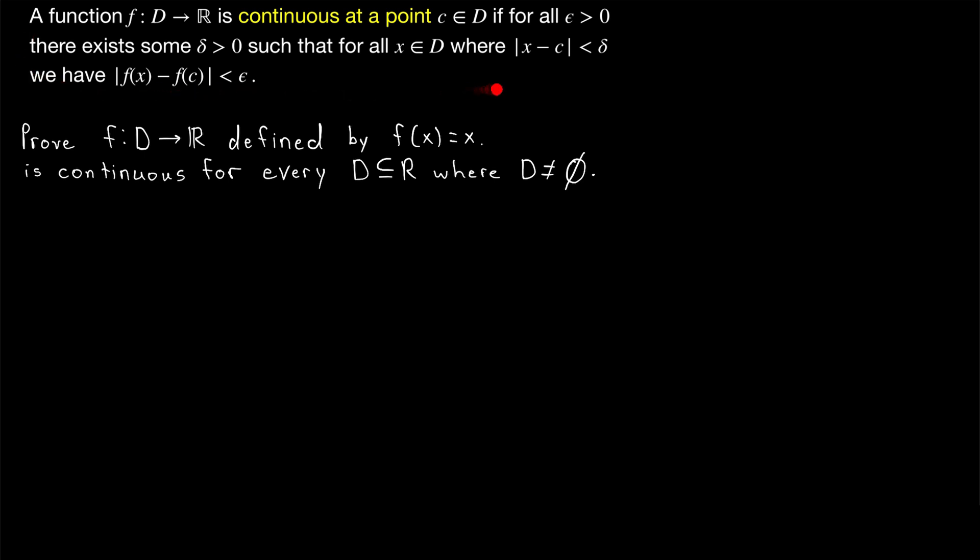Here is our definition for reference if you want to take a look at it. Let's get into this straightforward proof. Just like with our familiar convergent sequence proofs, we begin by taking an arbitrary epsilon greater than zero. We'll also take an arbitrary element c from the domain of our function.